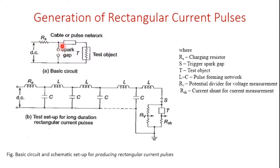When the spark gap is short-circuited, the previously charged cable or pulse network will supply the energy to the test object. Since it is very difficult to obtain a coaxial cable of sufficient capacitance and length, we use artificial transmission lines with lumped values of inductance and capacitance. Generally, 6 to 9 LC sections are sufficient to produce good rectangular waves.